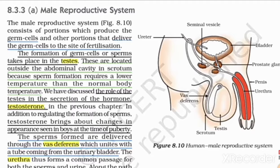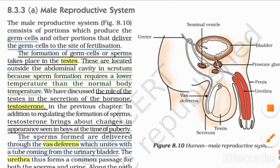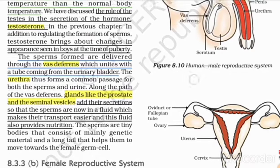The sperms are produced by the testes and these sperms are delivered through the Vasa deferens, which unites with the tube coming from the urinary bladder. It combines with the urine coming from the urinary bladder and passes through the urethra, forming a common passage for both sperms and urine.